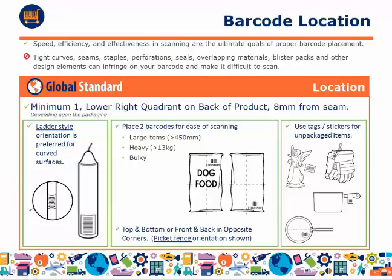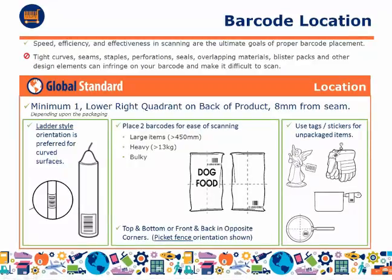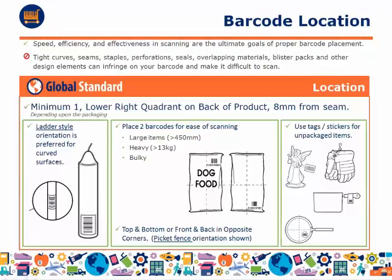A barcode can be oriented in one of two ways: ladder style, which is a vertical orientation useful for curved surfaces. For large items that are very heavy or bulky, it may be necessary to place two barcodes on the product packaging — on the front and the back — in an opposite quadrant, using the picket fence orientation, which is the horizontal orientation. If your product has no packaging, it may be necessary to include the barcode on tags or stickers.